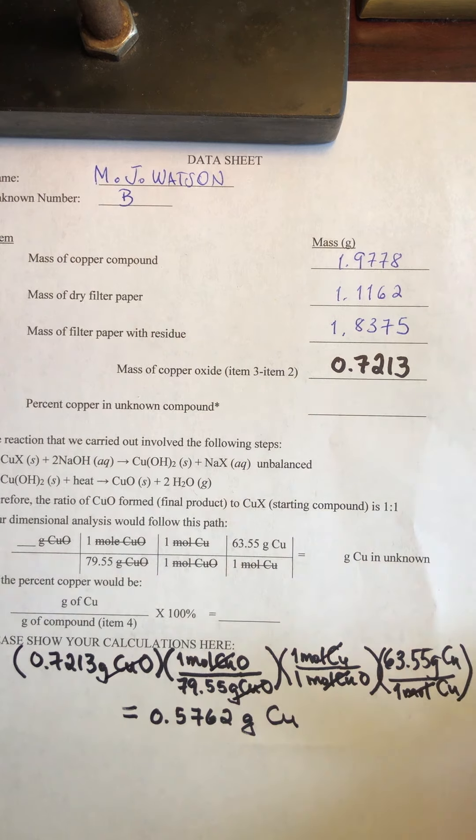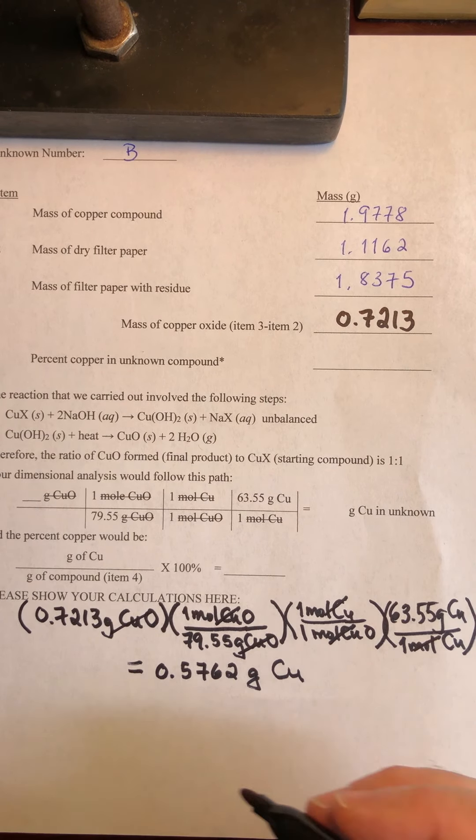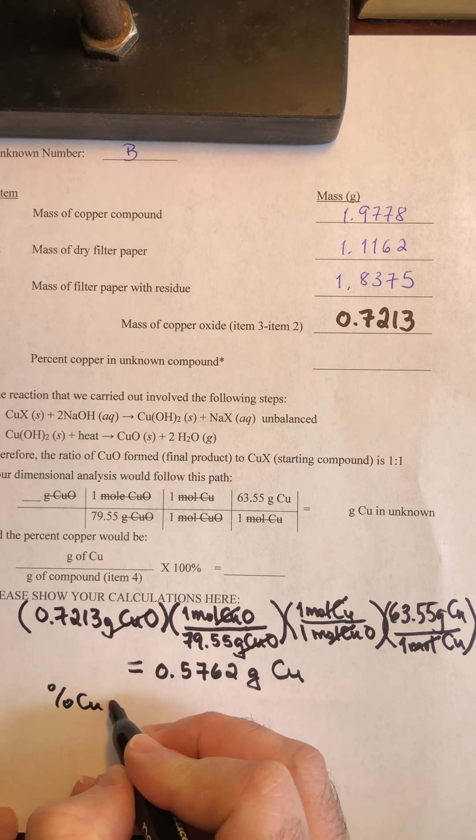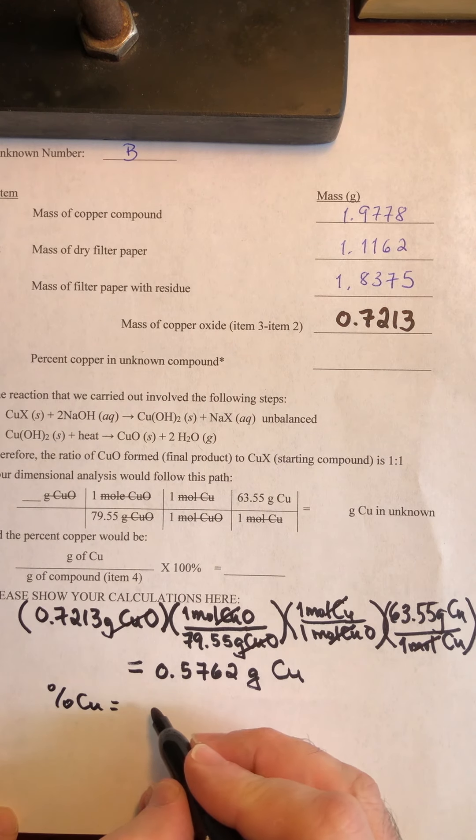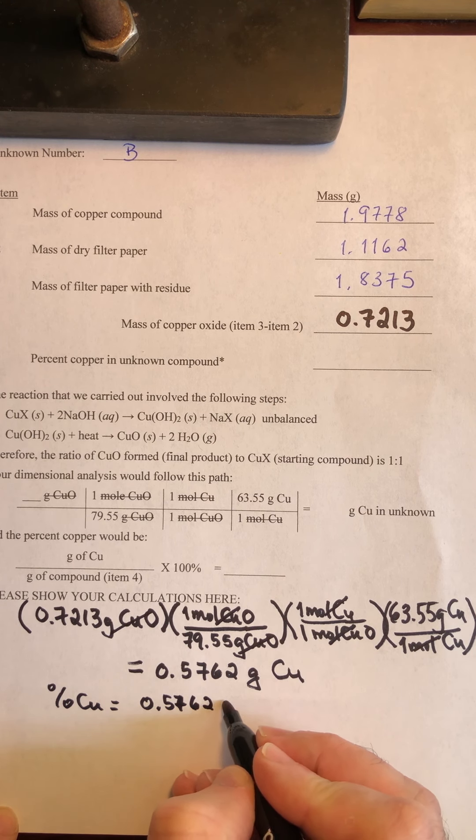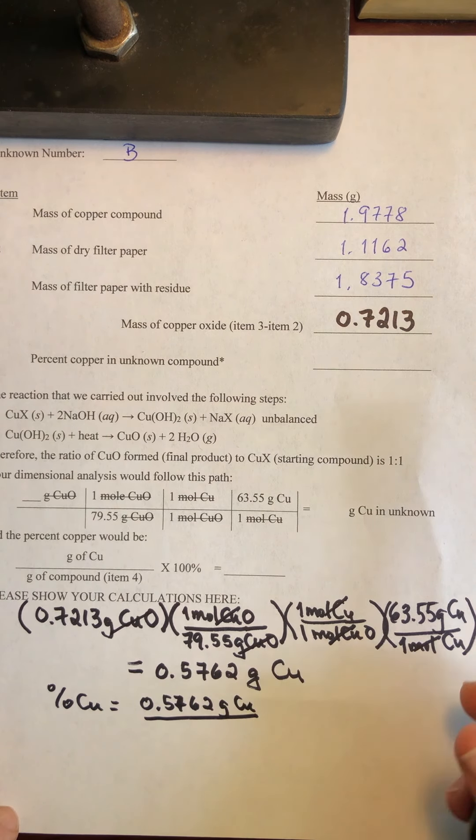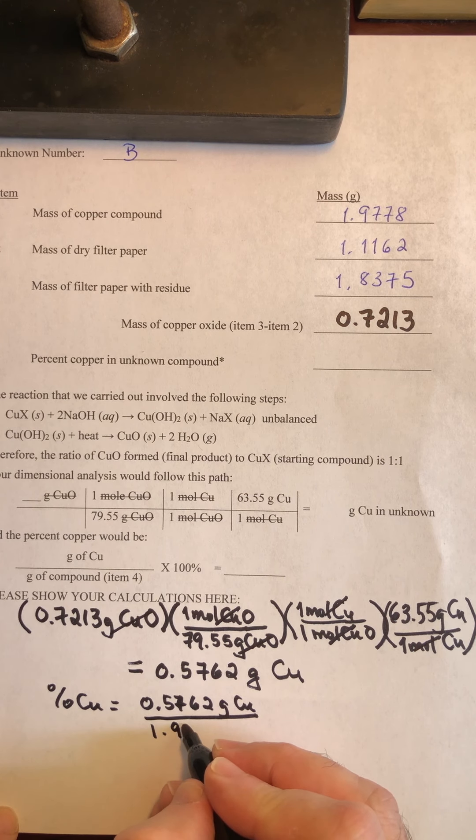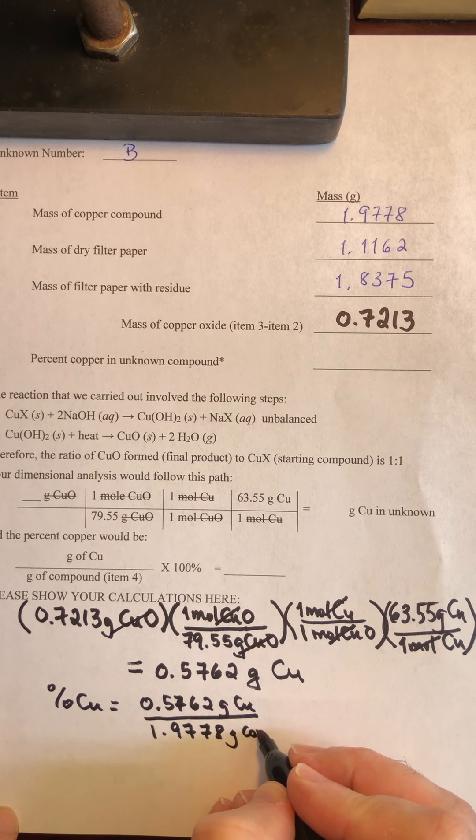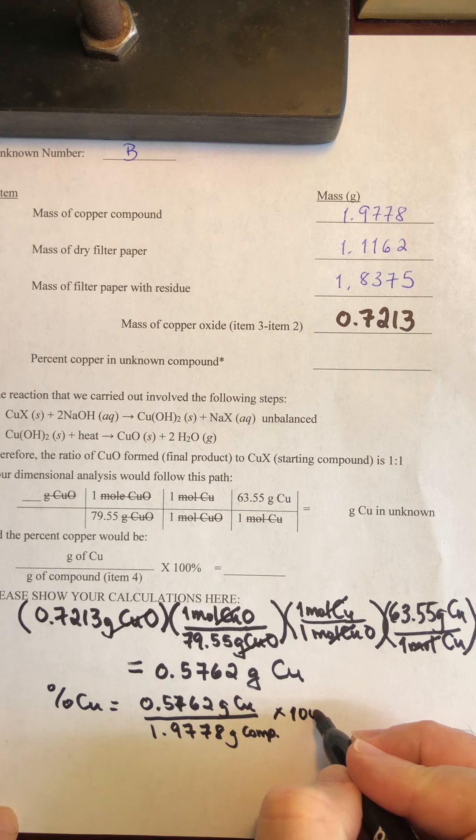our next equation is over here. We're going to calculate the percent mass. And I'm going to move the paper a little bit, slide it up a little bit here so we can see the rest of it. So let's see what the percent copper was. It says here we're going to use the grams of copper, 0.5762 grams of copper, divided by the total mass of our compound, which was 1.9778 grams of compound, times 100%.